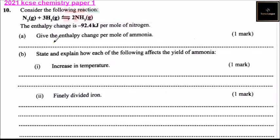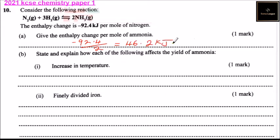Part A gives the enthalpy change per mole of ammonia. Since we have two moles forming the ammonia, to get the enthalpy change we say it is 92.4 divided by 2, and this will give you 46.2 kilojoules per mole.